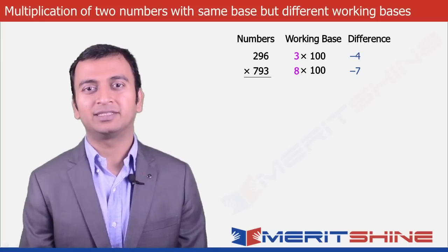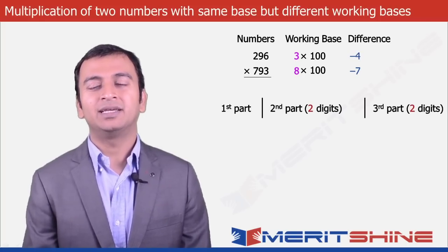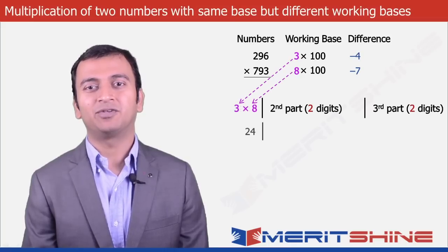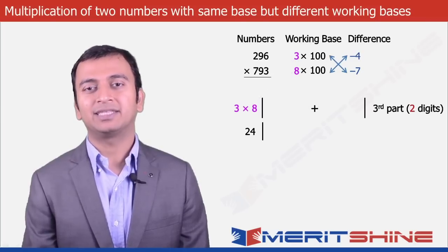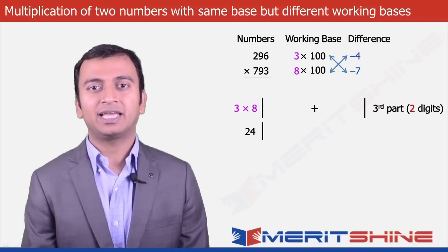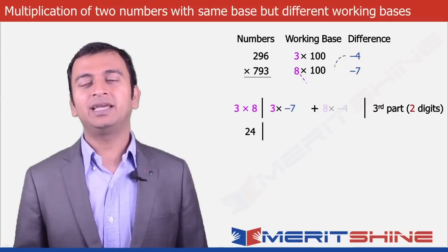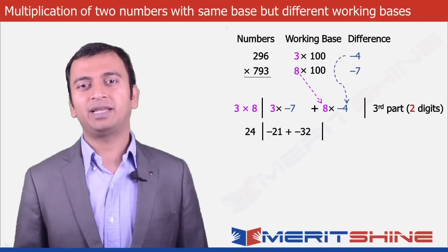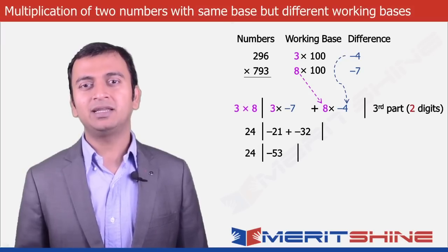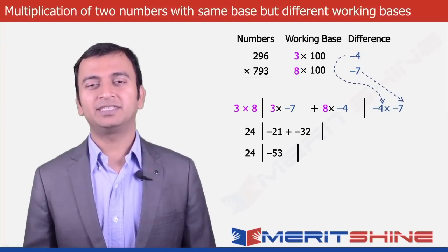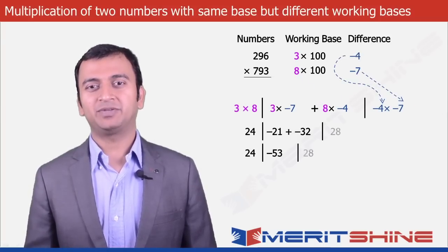Now let us proceed to write down our answer, which would be in three parts. The first part would be the simple product of the multipliers 3 and 8, giving 24. The second part would be the sum of the products of the first multiplier and second difference and second multiplier and first difference, which would be 3 into minus 7 plus 8 into minus 4, that is minus 21 plus minus 32, giving minus 53. And the third part would be the simple product of the differences, which is minus 4 into minus 7, giving plus 28.